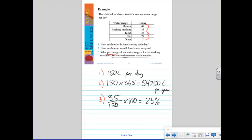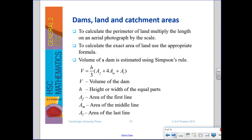Next, we look at dams, lands, and catchment areas — how we store large amounts of water at a state level, unlike a small backyard tank. Using aerial photographs, maps, and scales we can estimate the perimeter and length of dams, then calculate area by assuming a rectangular shape, or by using Simpson's rule. Once we have the area, we multiply by the depth to find the volume.